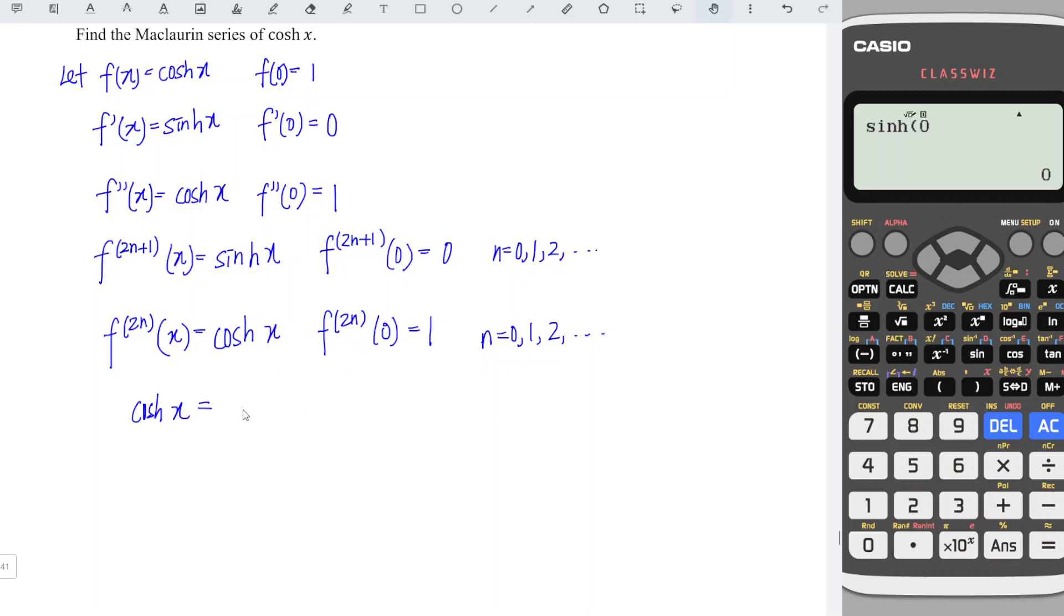We start from 0 factorial x to the power of 0. For this one, we refer to the original function, which is equal to 1.